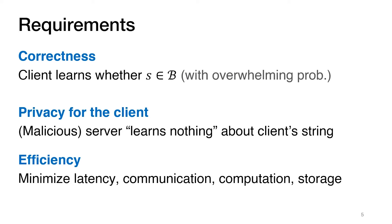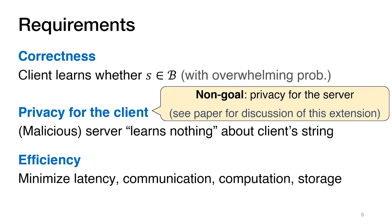Let's first look at the requirements of our system. The first requirement is correctness, meaning that an honest client interacting with an honest server should correctly learn whether its query string appears in the blocklist. The second requirement is that of privacy for the client, meaning that even a malicious server should learn nothing about the client's query string. Finally, we want our system to be efficient in terms of latency, communication, computation on both the server and the client, and the storage requirements for the client. Note that we do not require privacy for the server, and we treat the contents of the blocklist as being public.